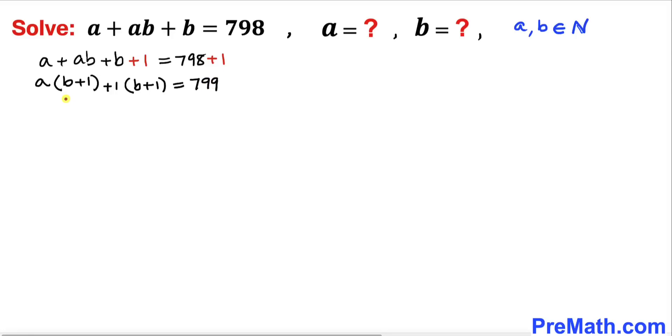Now we can see that (b plus one) and (b plus one) are in common, so we can factor out. We get (a plus one) times (b plus one) equals, on the right hand side, 799, which could be written as 17 times 47, where 17 and 47 are both prime numbers. So therefore I'm going to replace 799 by 17 times 47.